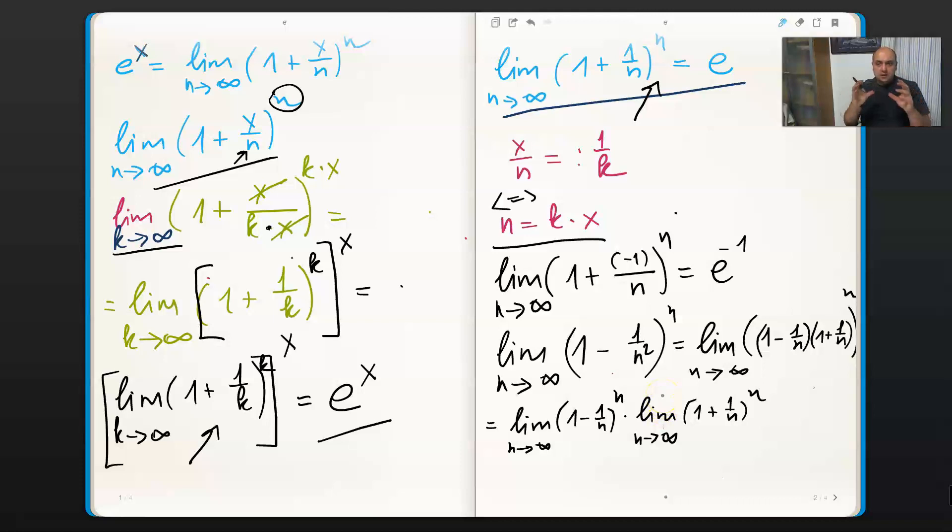We only can split the limits if we can make sure that the two new limits are already existent, and they are existing as you can see. So the first one is e to the power of minus 1 and the second one is e to the power of 1, and their product is e to the power of 0, which is 1.